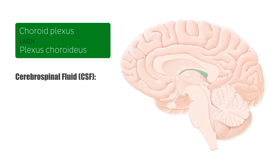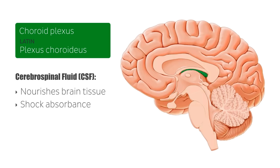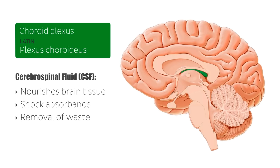The choroid plexus-synthesized cerebrospinal fluid contains water and other plasma components, amino acids and glucose, which nourishes brain tissue. Its presence in the subarachnoid space cushions the brain and provides shock absorbance in instances of mild to severe head trauma. Additionally, since the brain does not contain lymphatic vessels, cerebrospinal fluid acts as a conduit for the removal of waste products from the brain.